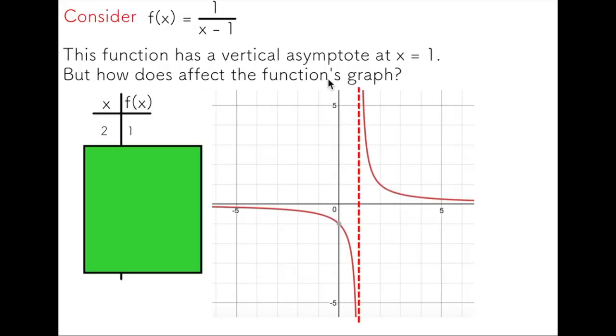I already have the graph of this function displayed here, but what I'm going to do very quickly is show you how you can use a table of values to predict what happens to the function as it approaches the vertical asymptote. I'm going to start by looking at x equals two, which is right here. When I sub in two, I have one over two minus one, also known as one. So you can see that point very clearly on the graph right here.